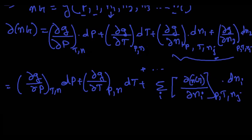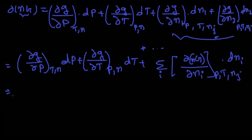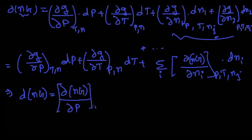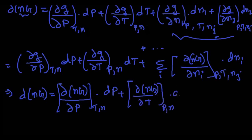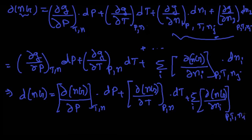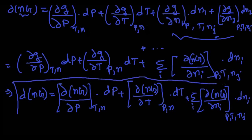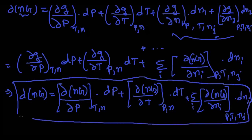I can generalize the last terms into a summation: d(nG) = (∂(nG)/∂P) at constant T, N · dP + (∂(nG)/∂T) at constant P, N · dT + Σᵢ (∂(nG)/∂Nᵢ) at constant P, T, Nⱼ · dNᵢ. This is what we have obtained after all the simplifications.